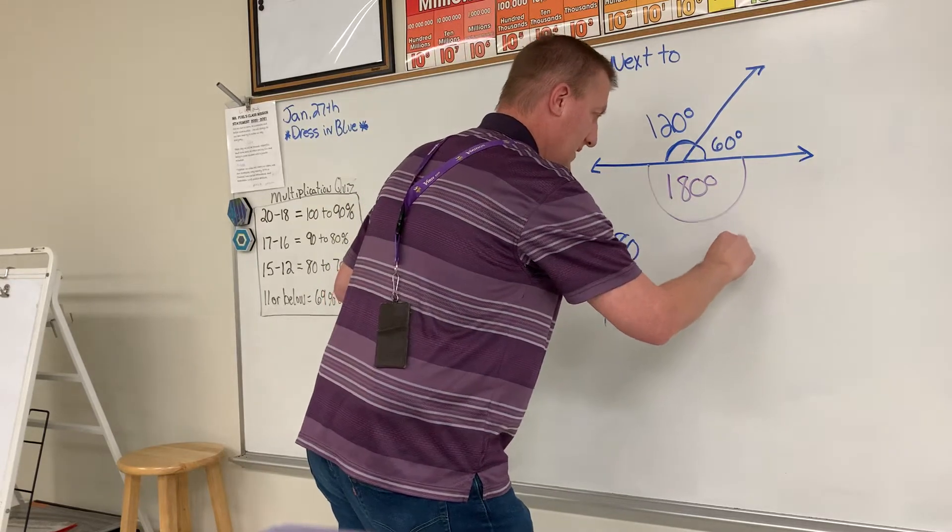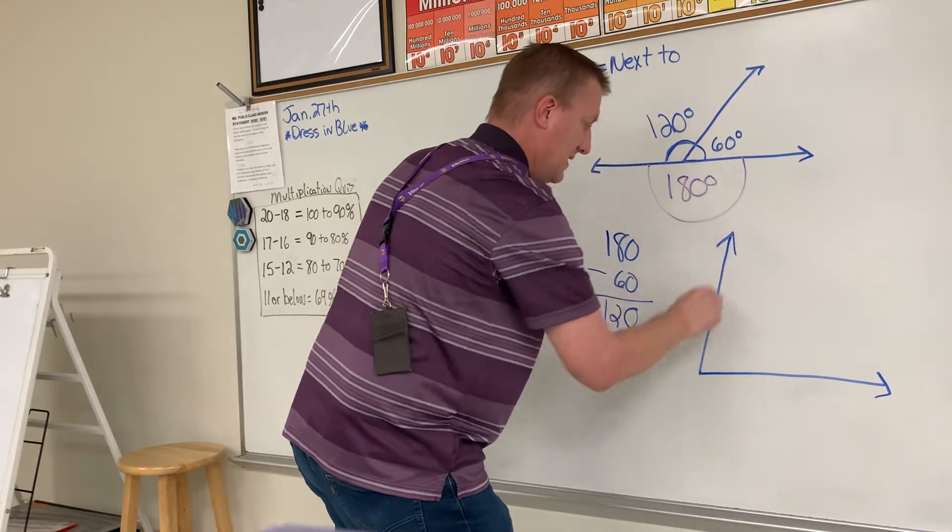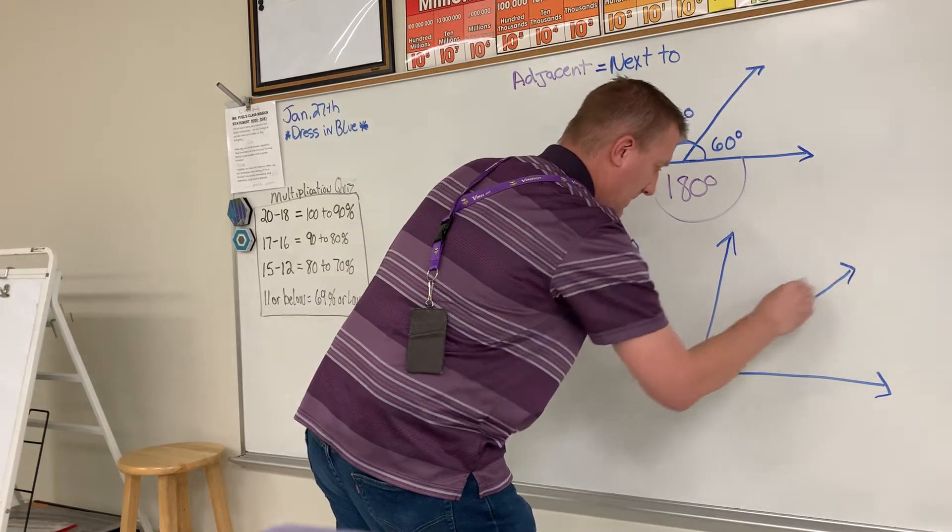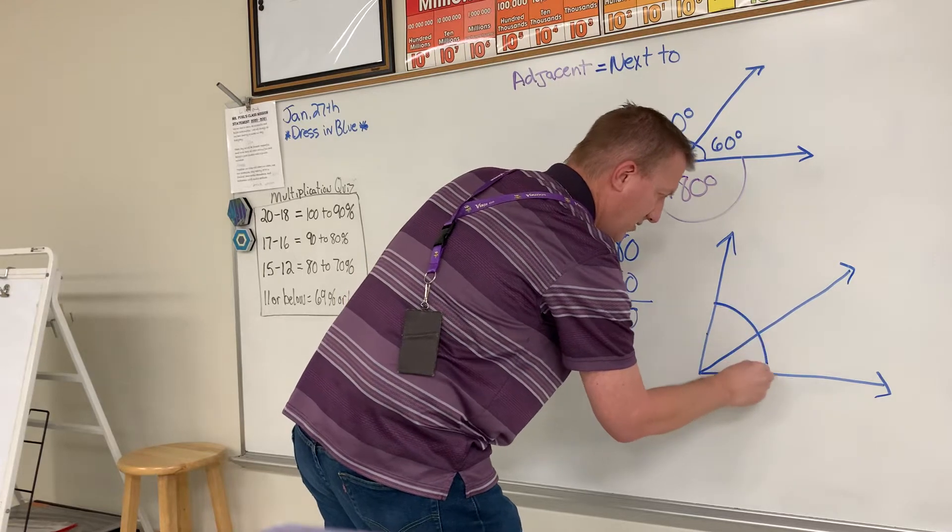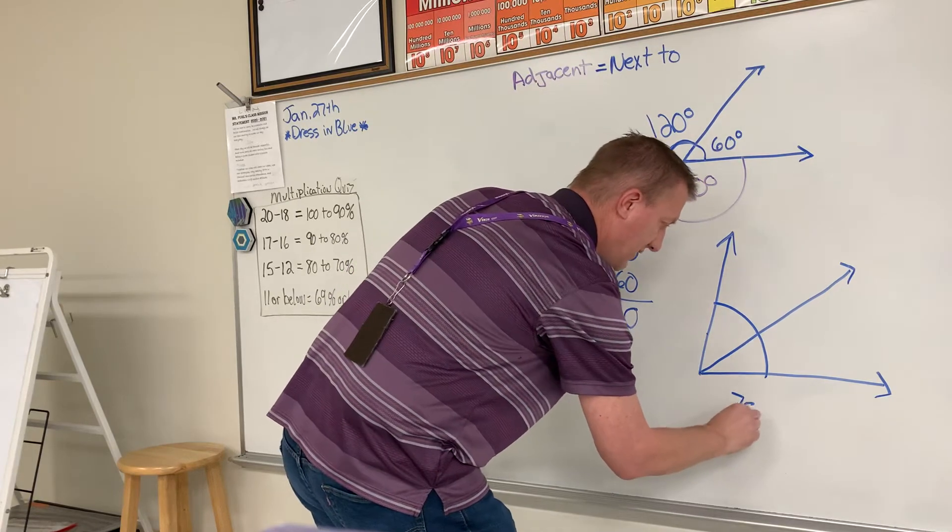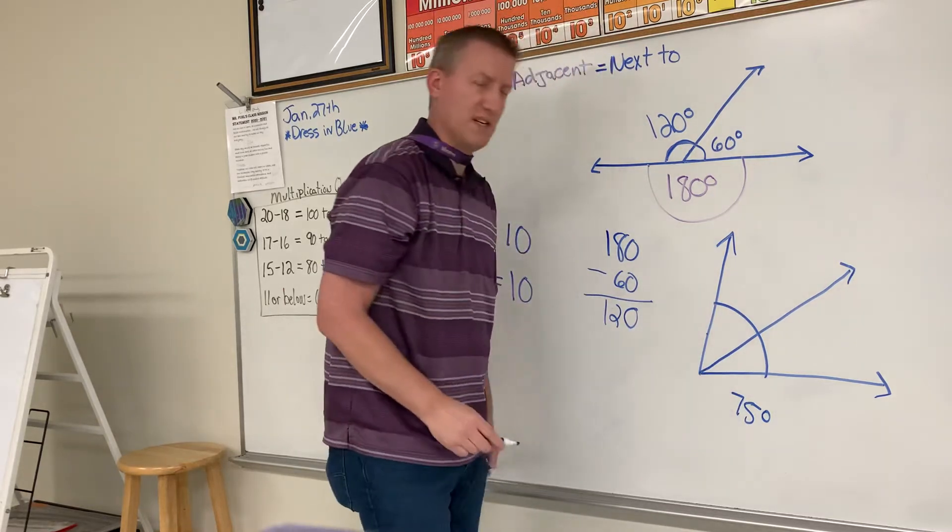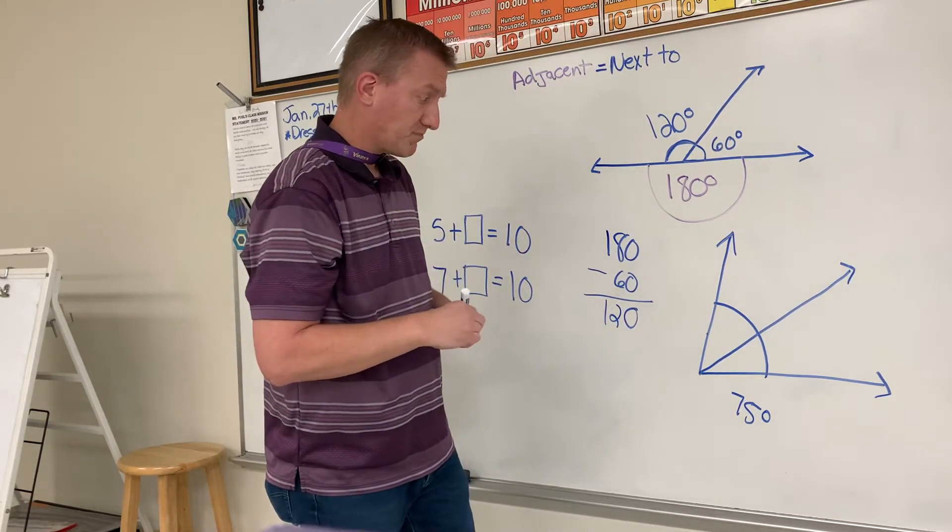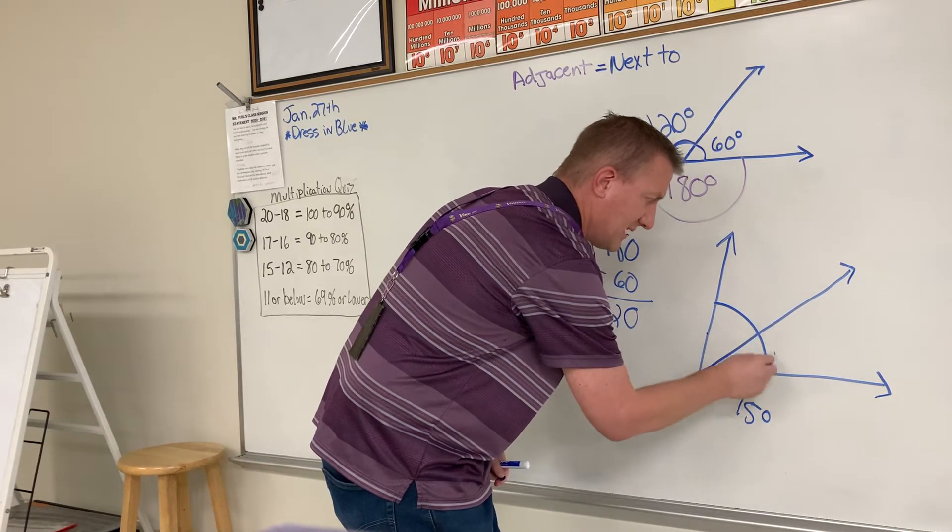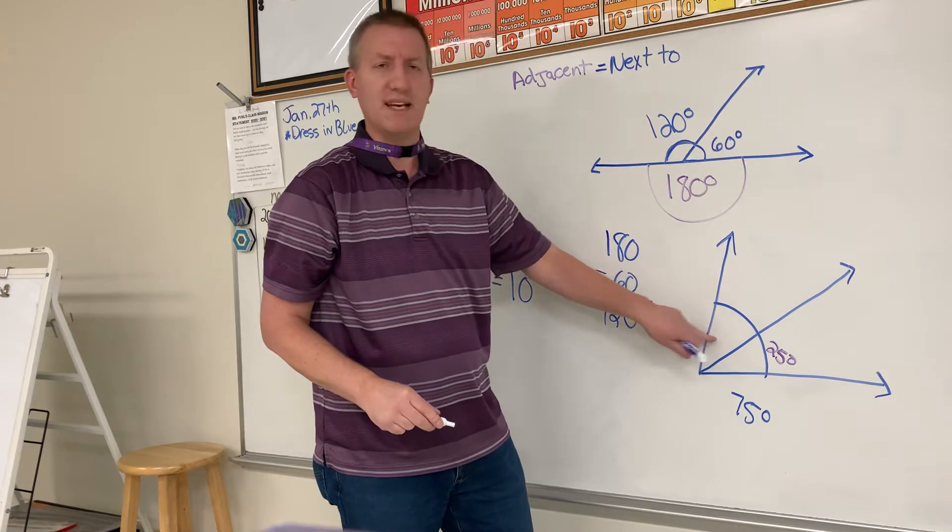That's how you find adjacent angles. Okay, or if we did this, here's another example angle. So let's say this big angle, this whole angle equals, we'll say, 75 degrees. So this big angle is 75 degrees. So then if this angle right here is 25, then how could we find what this angle is?